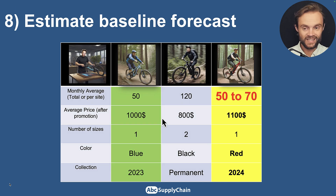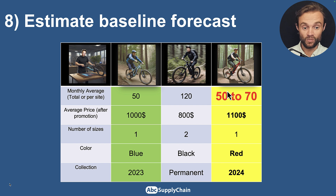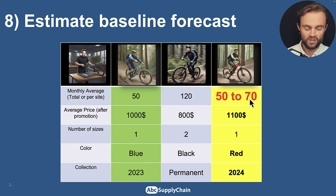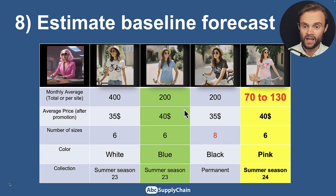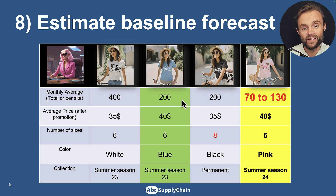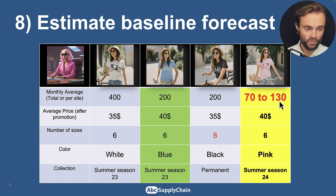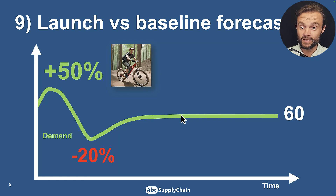Don't forget to use pictures to help everyone compare products visually. Once you have the similar product, you can start thinking and forecasting the baseline. For example, we say the baseline is 50 to 70 units — not as high as the black classic version which sells more, but more than the blue. For the collection, based on research showing pink sells less than blue, we forecast 70 to 130 quantities per month — and that's what we use for the forecast.